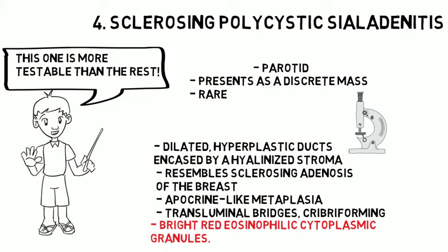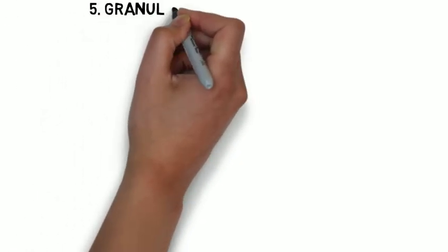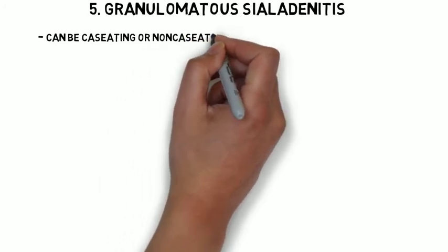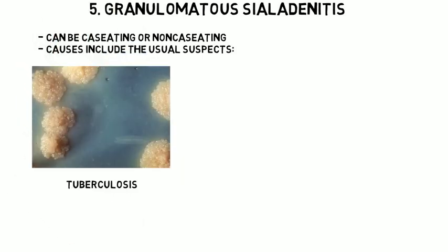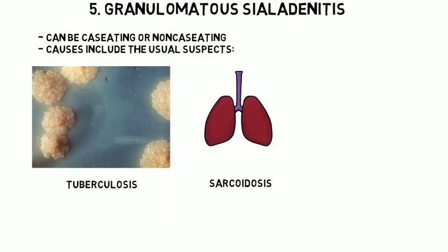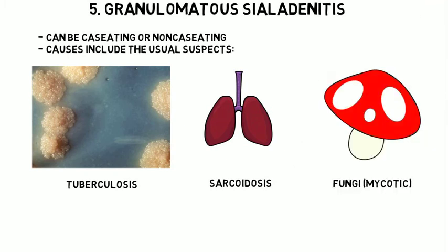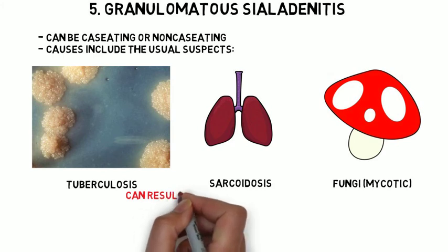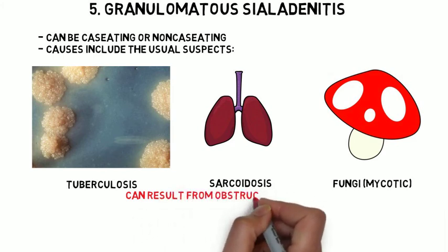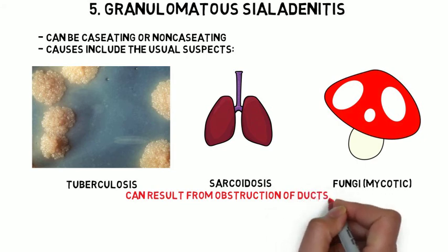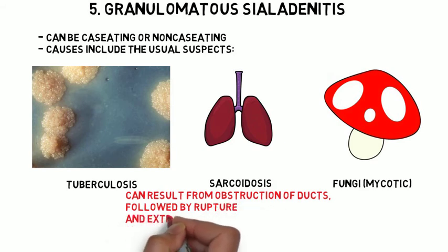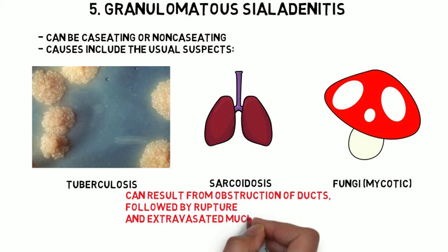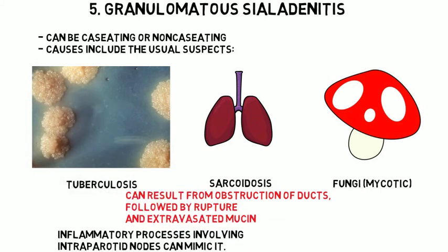Next is granulomatous sialadenitis. These can be caseating or non-caseating and are due to the usual suspects: tuberculosis, sarcoidosis, and fungi. Note the rough and buff colonies of tuberculosis. Granulomatous sialadenitis can also occur from obstruction leading to extravasation of mucin. Histologically, you'll see multiple histiocytes, granulomas, and a mild chronic lymphocytic infiltrate. Inflammatory processes involving the intraparotid nodes can also mimic it.